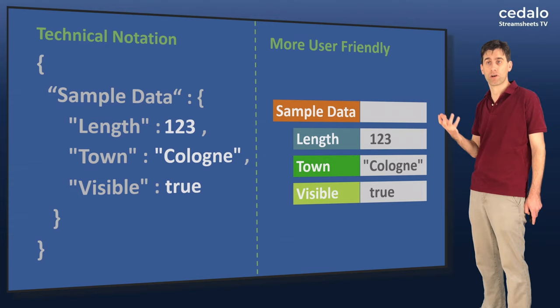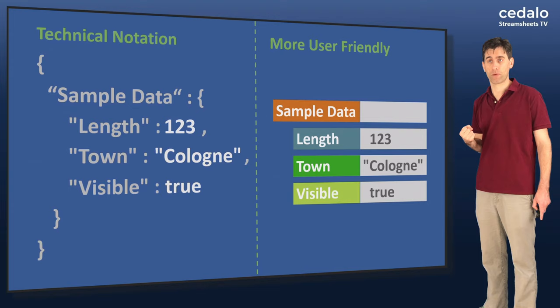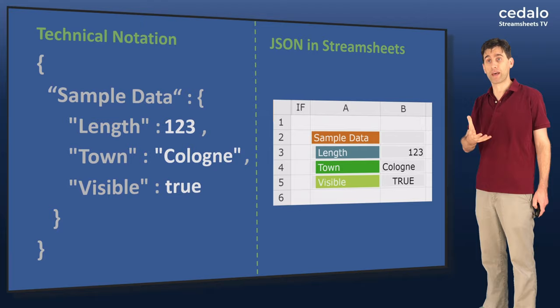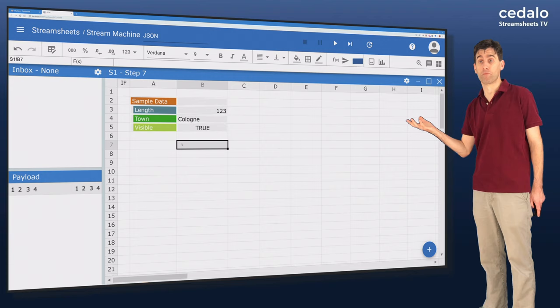Finally, on the right-hand side, the 123, Cologne, and true column indicates the values of those three objects. So this gives us a very visual, very easy to grasp version of JSON. Now, what we've done here is taken that format and put it straight into StreamSheets. So it looks exactly the same. It's very straightforward to produce this data type in StreamSheets and use it for whatever purposes you need.